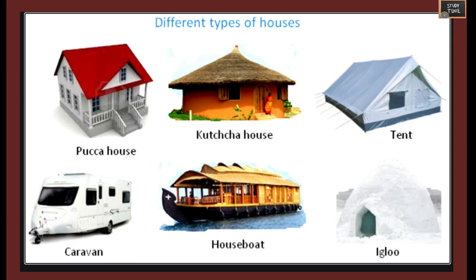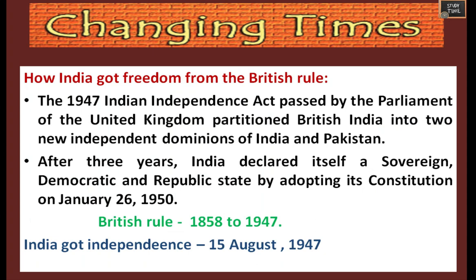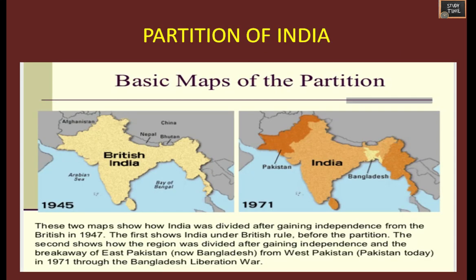Next, we'll see how India got freedom from British rule. After many struggles, India got independence on 15th August 1947. The British rule was between 1858 to 1947. After many struggles and fights by freedom fighters, India got independence.